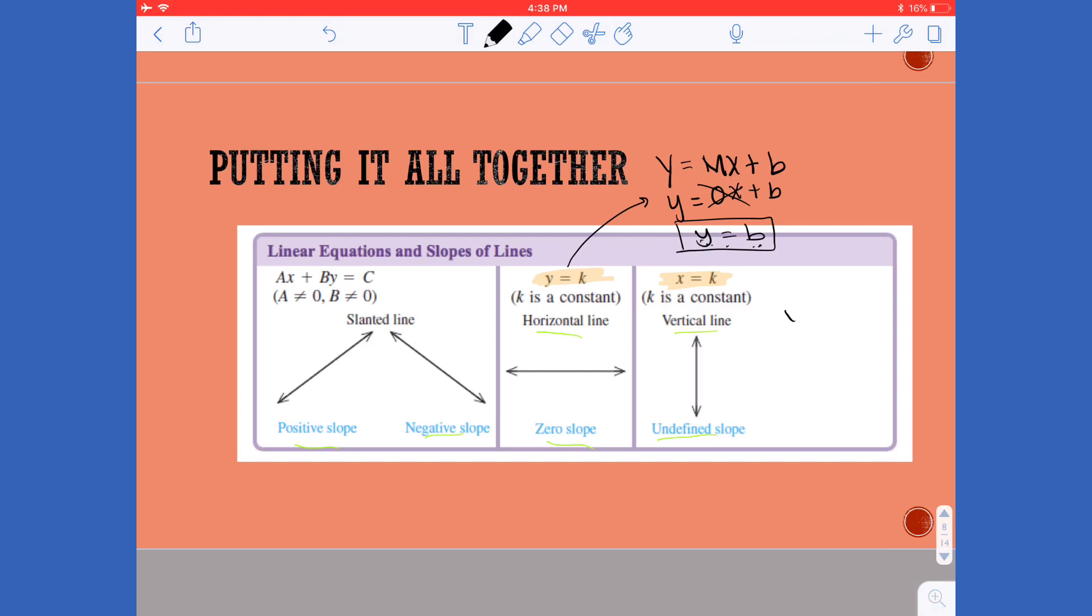When I think about a vertical line if I were to follow that same strategy y equals mx plus b we run into an issue because our slope is undefined and there's no numerical value that I can put in for m when my slope is undefined. So this won't work when we're trying to write the equation of a vertical line.